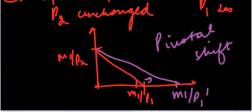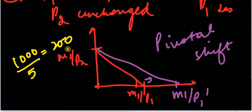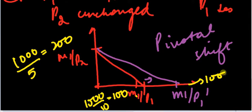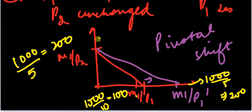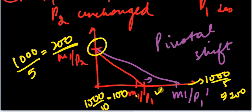For example, initially the x2 intercept was 1000/5 = 200, and the x1 intercept was 1000/10 = 100. Now with the price of good 1 fallen to 5, the x1 intercept becomes 1000/5 = 200. So if you spend your entire income on good 2, consumption is unchanged, but if you spend entirely on good 1, consumption of good 1 increases.